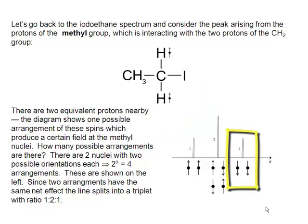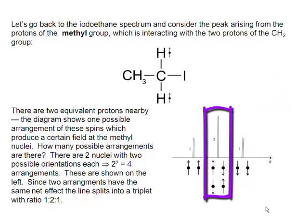But I could have drawn them pointing the other way, both spin down, in which case that would be an opposing field and we'd get a shift up in B. Or I could have drawn them one up and one down, in which case they would cancel each other out and there would be no effect. So that line would be in the middle.